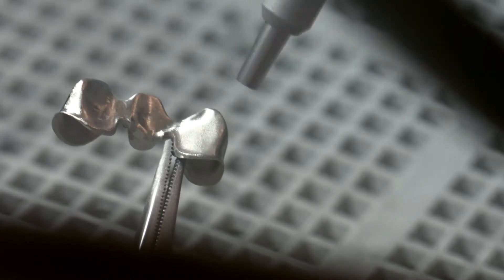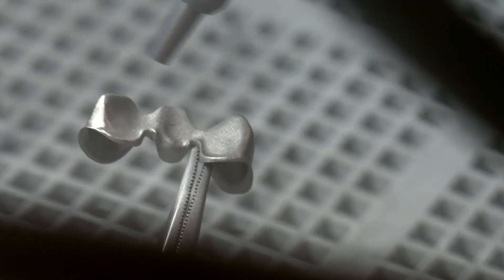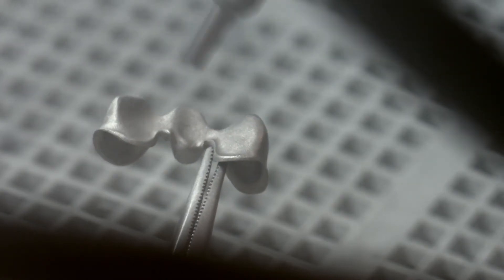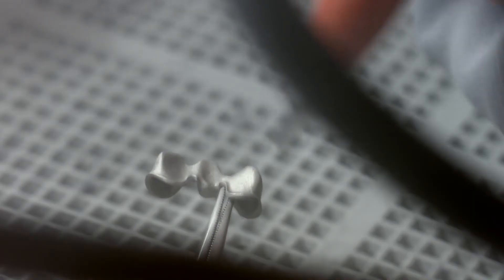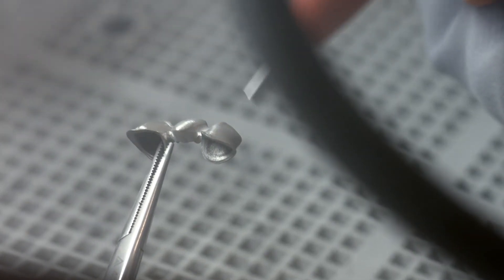Carefully blast the framework with aluminum oxide after finishing. The strength of the blasting pressure depends on the hardness of your framework alloy. The enlarged surface and micro-retentive areas produced by the blasting process enhance the mechanical bond of the ceramic to the metal framework and therefore the quality of the restoration.